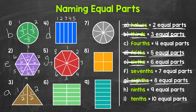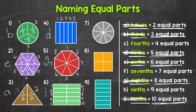Moving on to number six. This whole has been divided into one, two, three, four, five, six, seven, eight, nine, ten equal parts. We call ten equal parts tenths. So let's put an I next to number six and cross off tenths. Each one of those equal parts is one tenth of the whole.